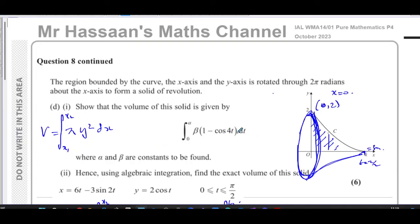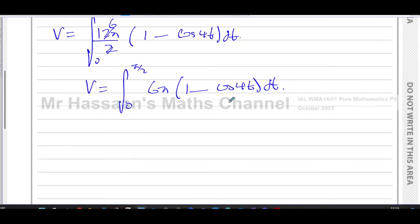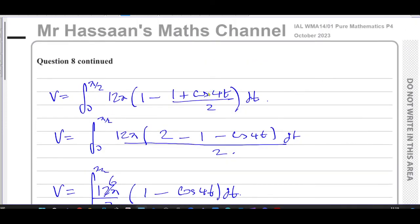So we can say the volume of revolution is given by the integral between 0 and pi over 2 of 6 pi times 1 minus cosine of 4t with respect to t. And that's exactly what we had to show. Something times 1 minus cosine 40 with respect to t. So that the alpha was pi over 2. And that beta was 6 pi. So there's the answer to that question part one.